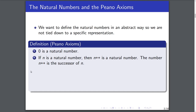The second axiom is that if n is a natural number, then we can apply this function called the successor function, which we'll denote by having a ++ on the n, and n++ is also a natural number. We call n++ the successor of n. So if I have a natural number, I can apply this function and get yet another natural number.